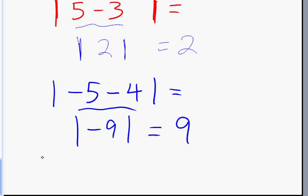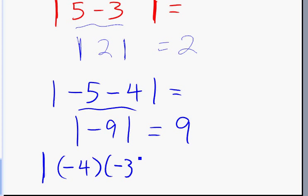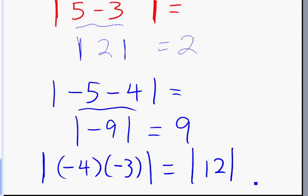How about the absolute value of negative four times negative three? First, you need to multiply negative four and negative three. That would be twelve, and the absolute value of twelve is twelve.